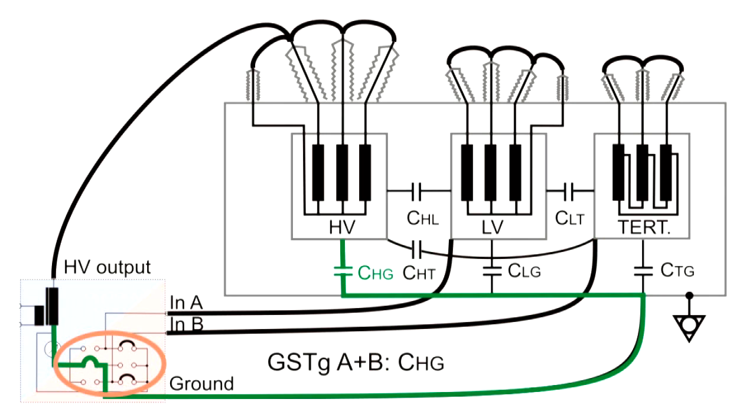Now GSTGA plus B to measure CHG, the capacitance between the high voltage winding and the tank. Again, no rewiring of test leads is required.